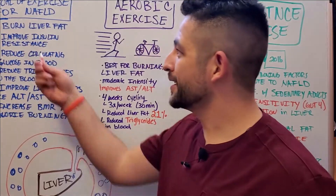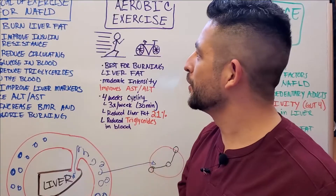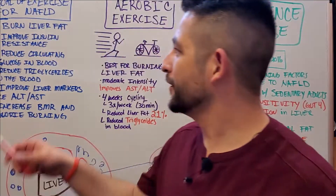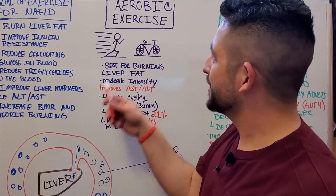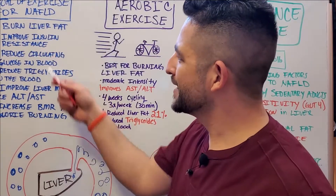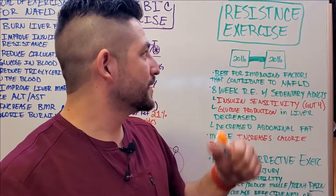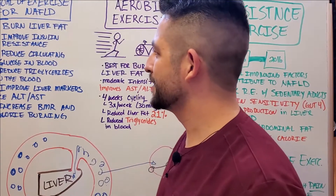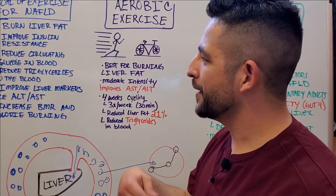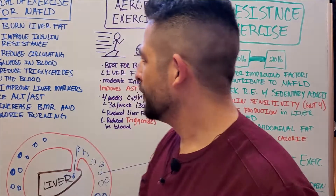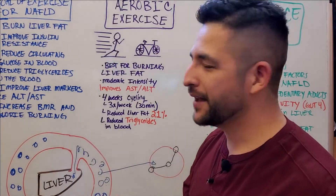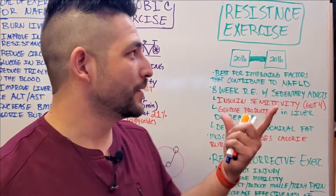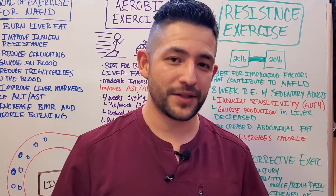Going back to our original goals list, you'll notice that we've actually achieved all of our different goals through the combination of aerobic exercise and resistance exercise. Burning liver fat is covered by aerobic exercises. Improvement of insulin resistance is covered through resistance exercise, as the muscle contraction helps improve insulin sensitivity. We reduce circulating glucose and triglycerides through resistance training, and we cover liver markers and increase our BMR. The combination of these two exercises covers a lot of ground when it comes to reversing fatty liver.